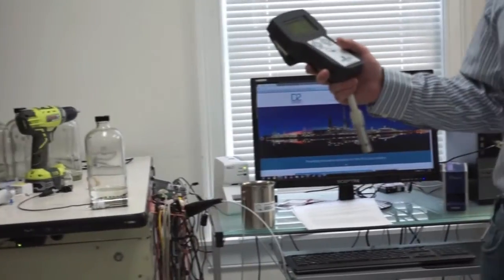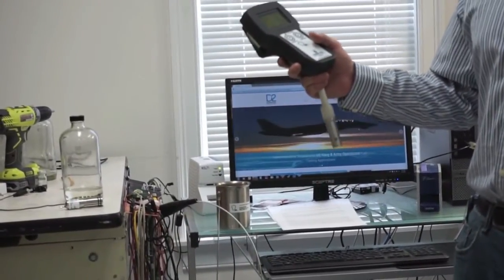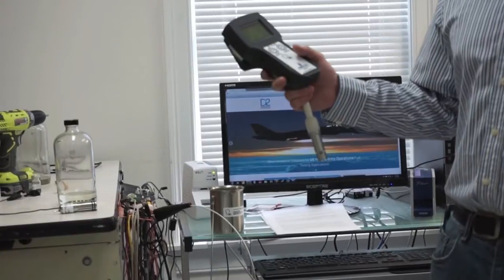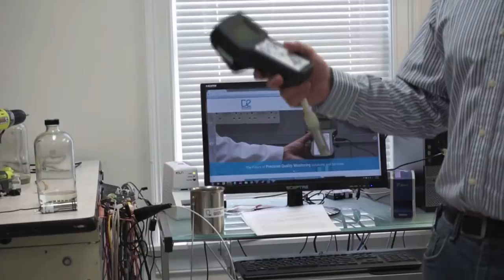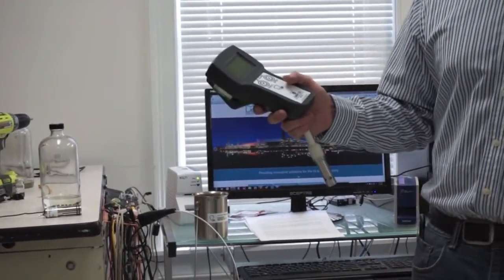This is the JF1A HH handheld conductivity meter, used to determine the electrical conductivity of distillate fuels and hydrocarbon liquids in the JF1A HH-CM range.